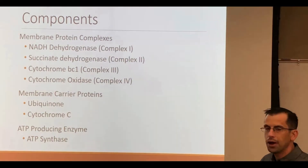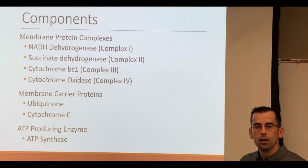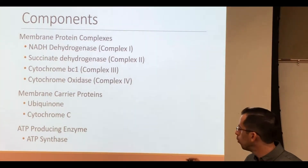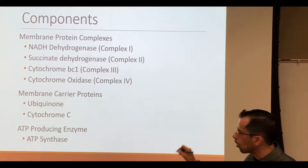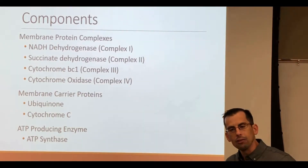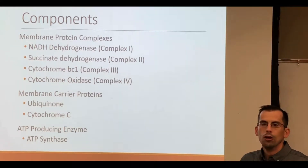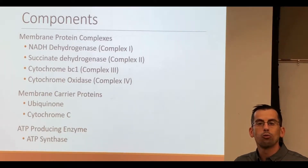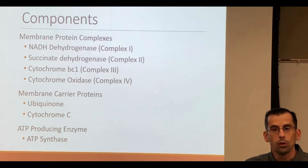Finally, we have our ATP synthase, embedded in the mitochondrial membrane. It is the enzyme that's effectively going to be our ATP producer. From here, let's take a closer look at how the oxidative phosphorylation process takes place, and we'll head on over to the whiteboard.